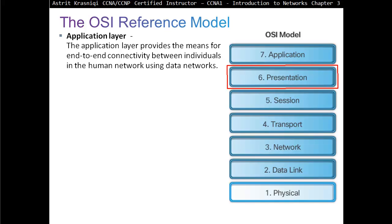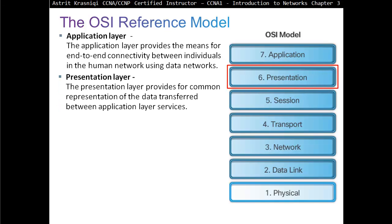Layer 6 is the presentation layer. As the packet starts from the application layer it goes down through the layers. The presentation layer provides a common representation of data transferred between application layer services. It takes the application stream, looks at how to format it — does it need encryption before sending? Formatting includes things like whether it's JPEG or MPEG. So it decides how to present this stream.